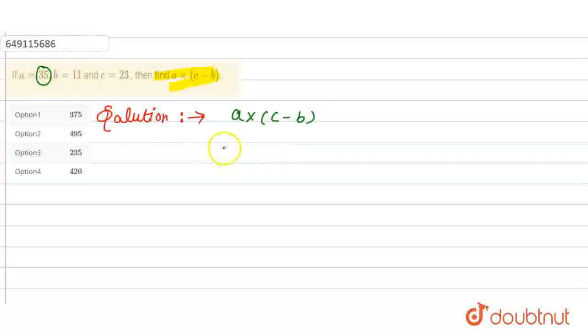That is 35. So here we will put 35. In option 2 we have C value, that is 23. And minus B value, that is 11.